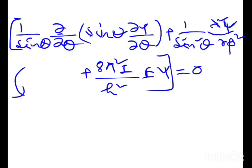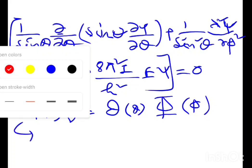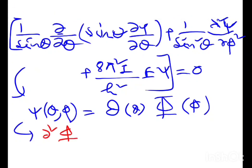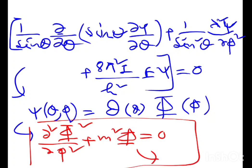We separate variables: psi of theta phi equals Theta(theta) times Phi(phi). For the phi equation, we get del squared Phi by del phi squared plus m squared Phi equals zero. From this we get Phi(phi) equals N e to the power plus or minus im phi.